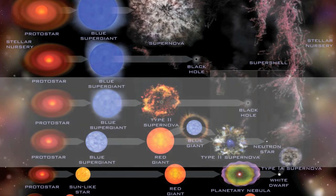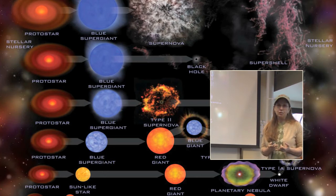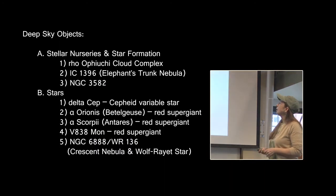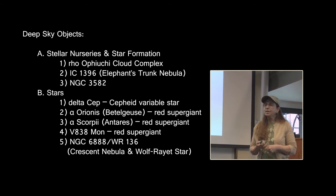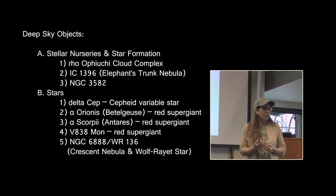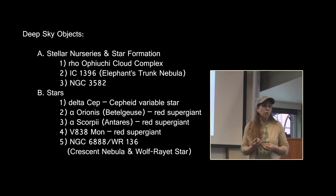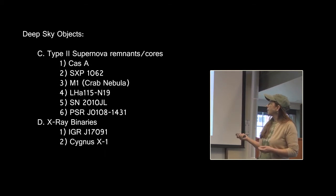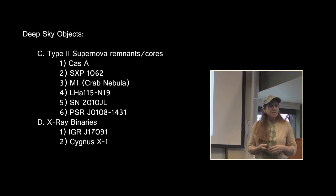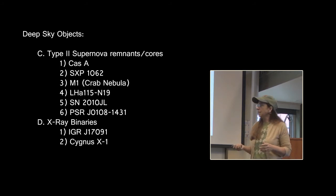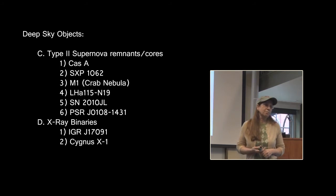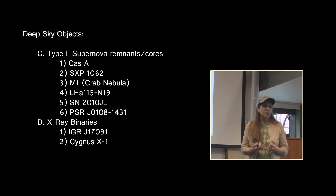You only need to concern yourself with Type 2 supernova events and the stellar cores that are left behind. This year's deep sky objects include three star formation complexes; five stars — one Cepheid variable star, three red supergiants, and one Wolf-Rayet star; six Type 2 supernova remnants, with five supernovae with stellar cores and one stellar core without a remnant; and two X-ray binaries. X-ray binaries are binary systems consisting of a stellar mass black hole with a companion star.